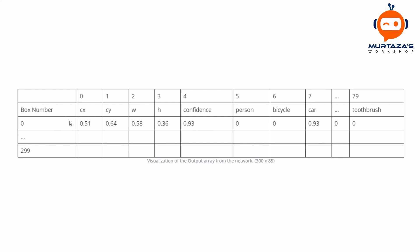Because we have 300 outputs, we will have 300 different rows, from 0 to 299. This is only for the first output with 300 by 85. The other two output layers will have 1200 by 85 and 4800 by 85 respectively.